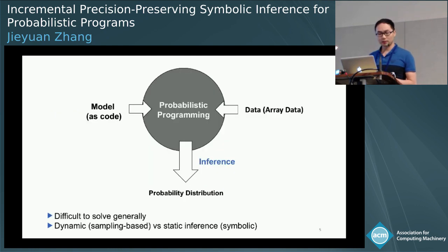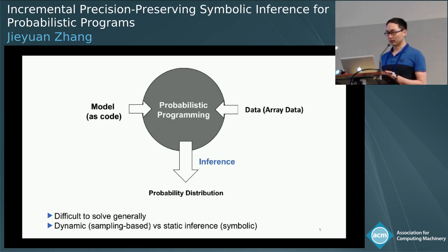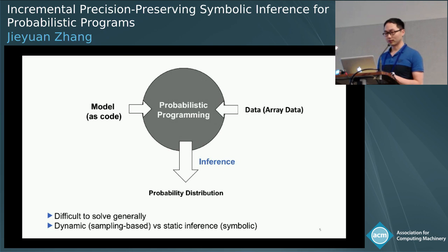The purpose of probabilistic programming is to conduct statistical inference to compute a probability distribution given a group of data. However, the inference of probabilistic programs remains a difficult problem. Different probabilistic program systems take different approaches, such as dynamic inference, which is sampling-based, or symbolic inference.